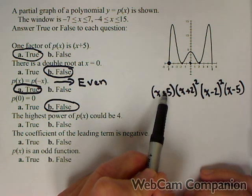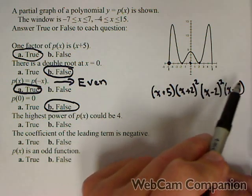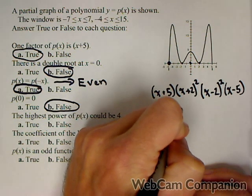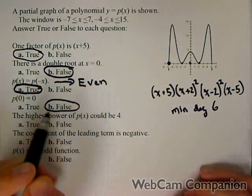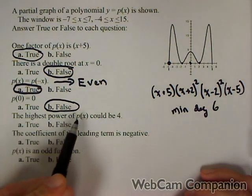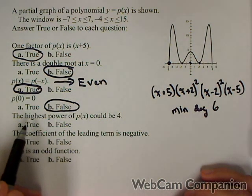So the minimum degree we could have is one, three, five, six. So the min degree is six. So there's no way this could be a fourth degree polynomial. It has to be higher.